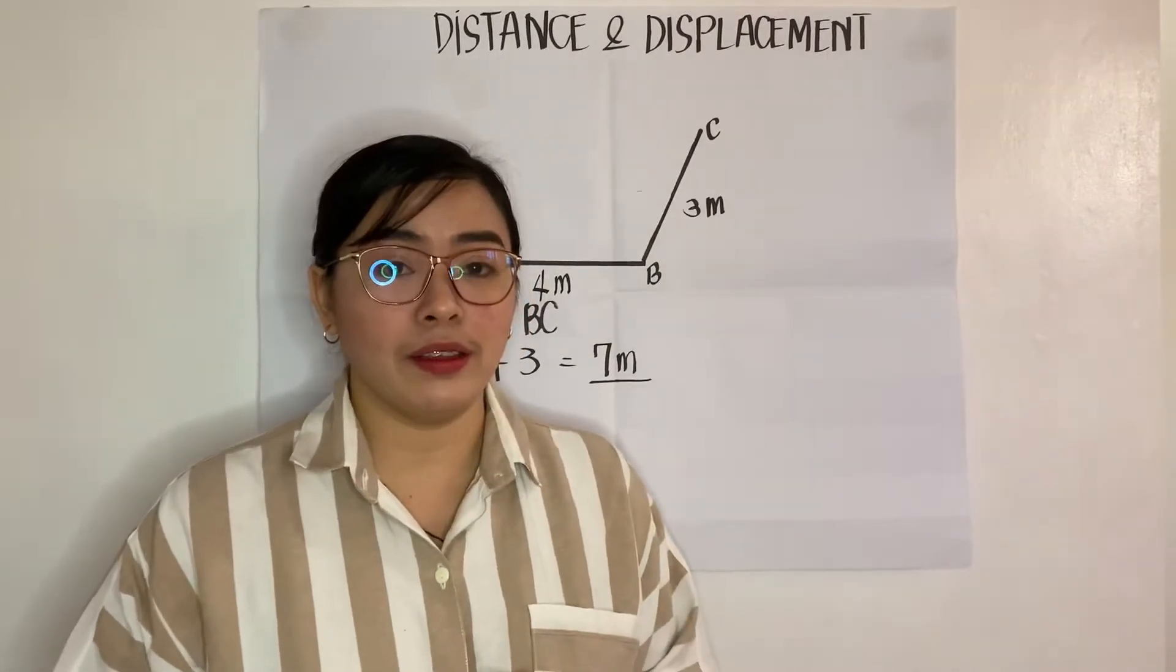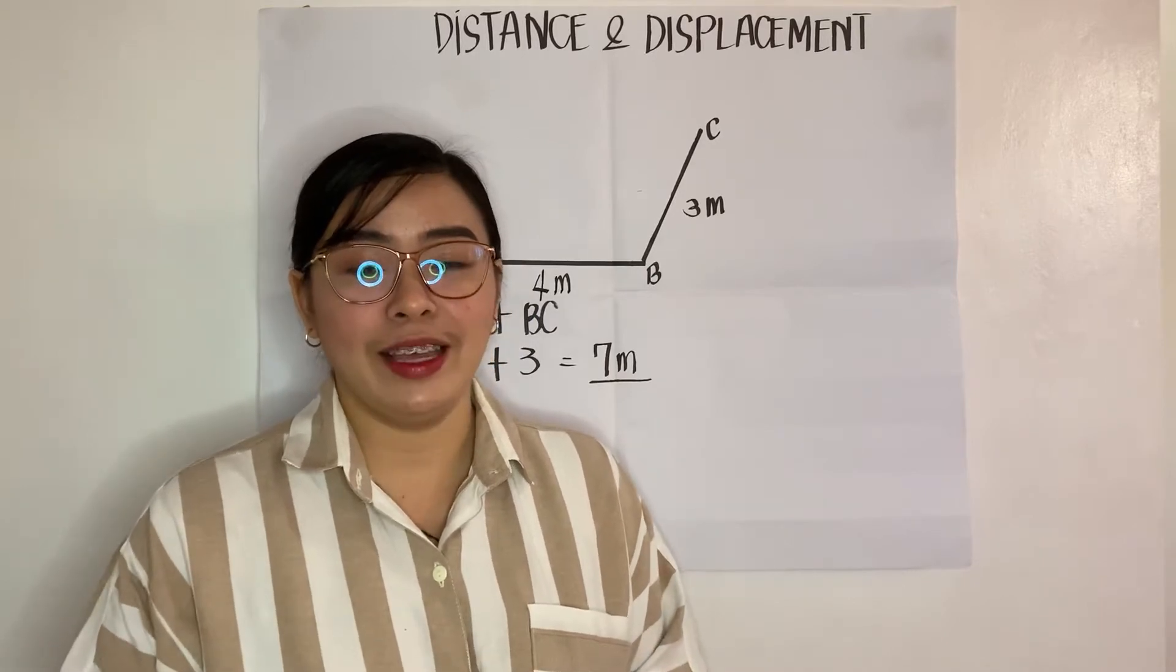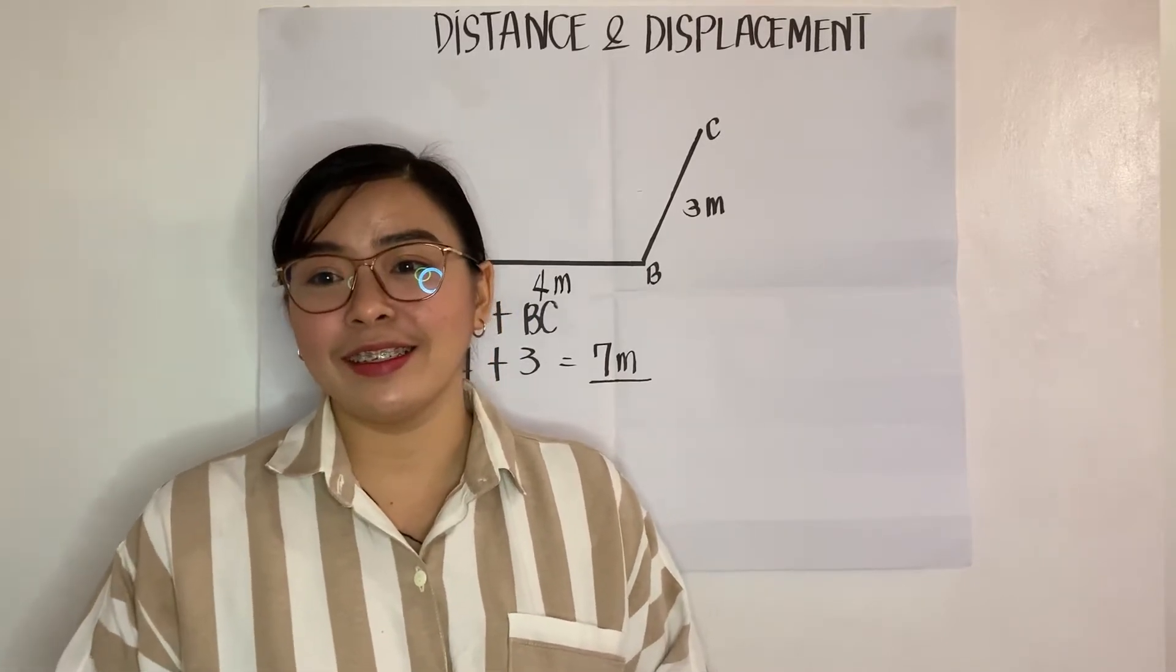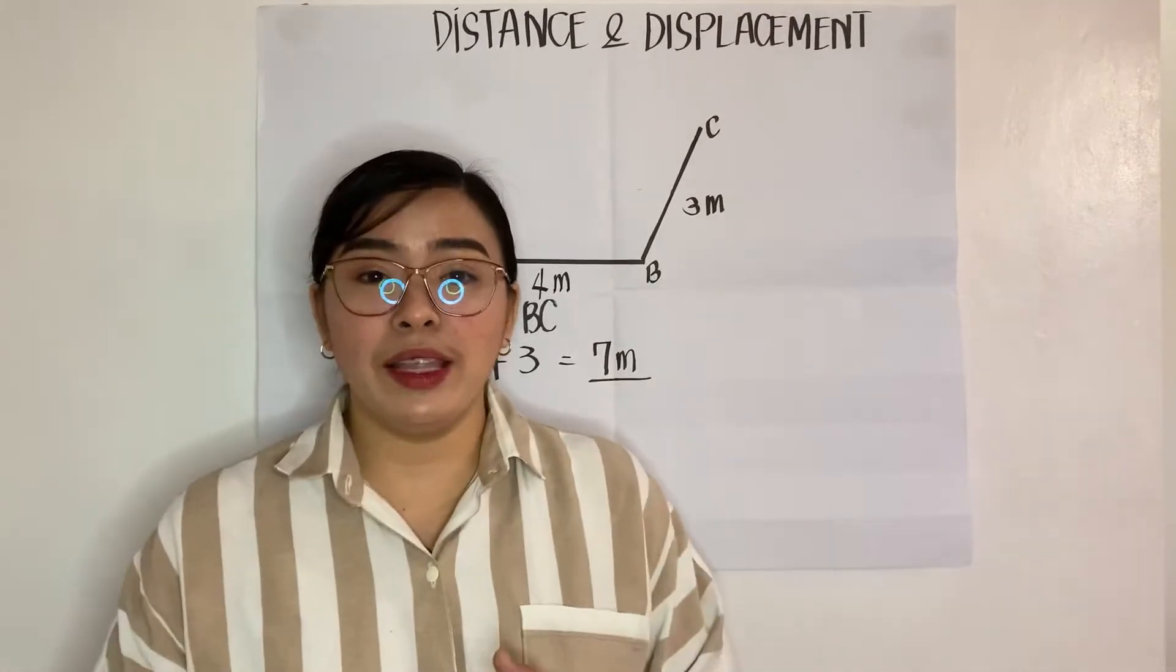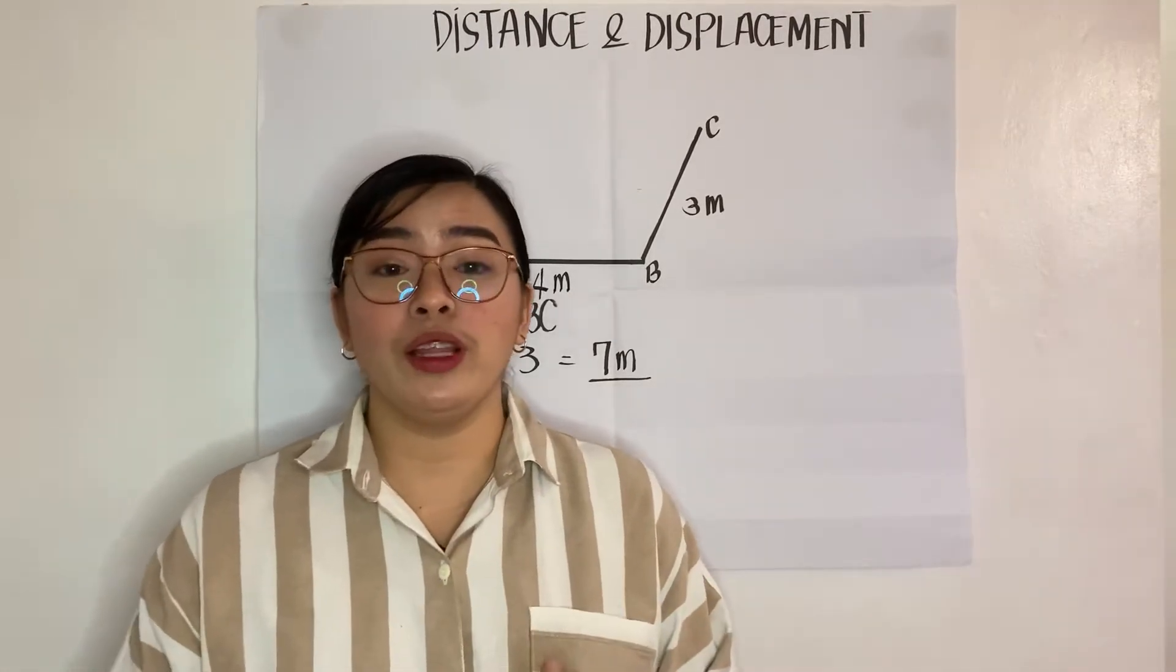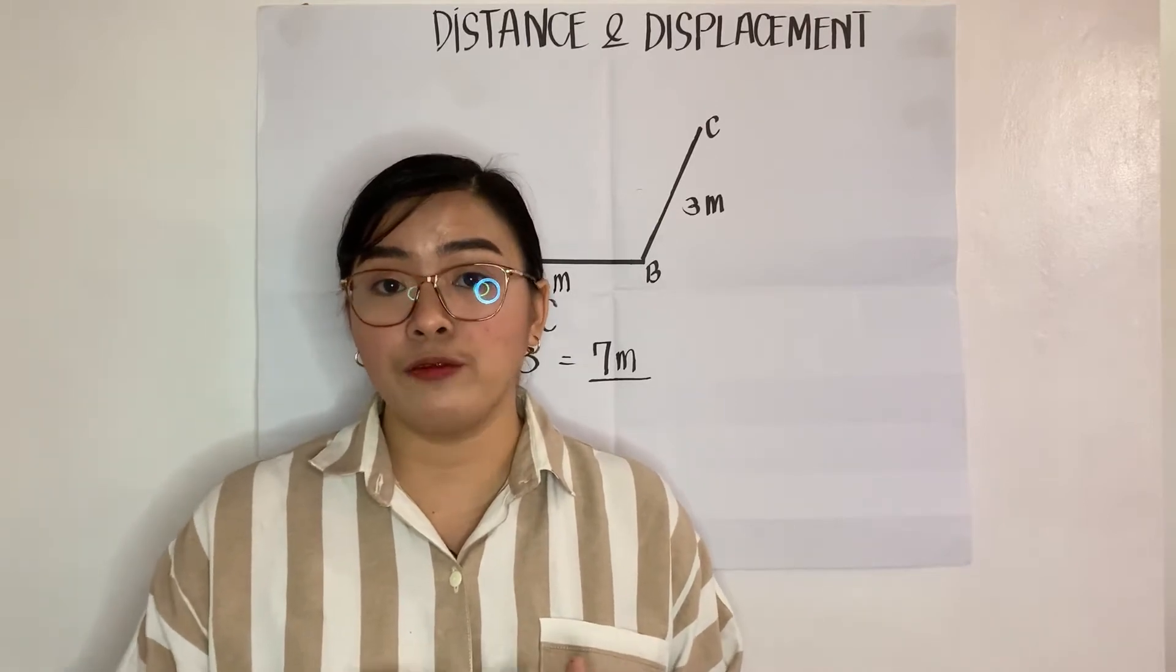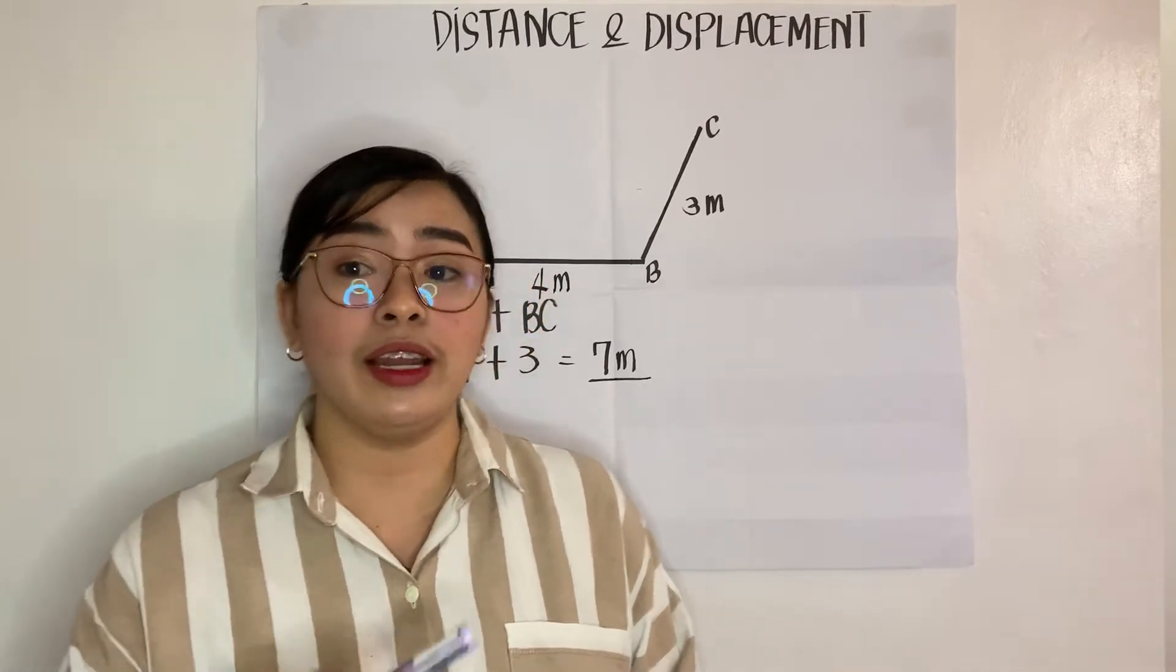Now, what is displacement? Anyone? Yes, please. Okay, great. Displacement is the shortest distance between initial position and final position of an object in a given direction.